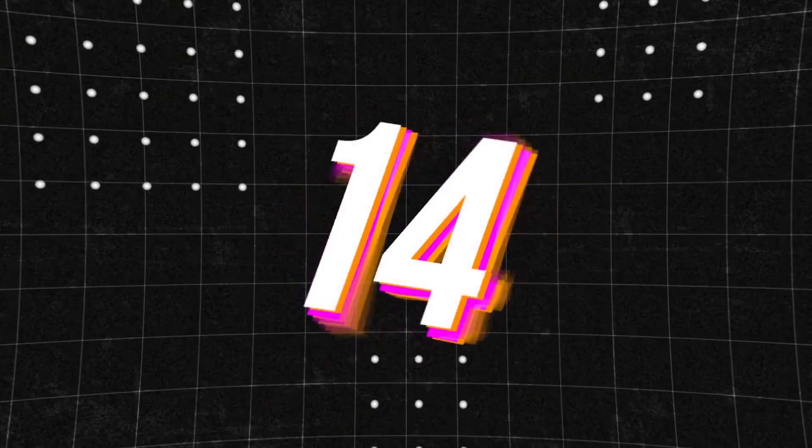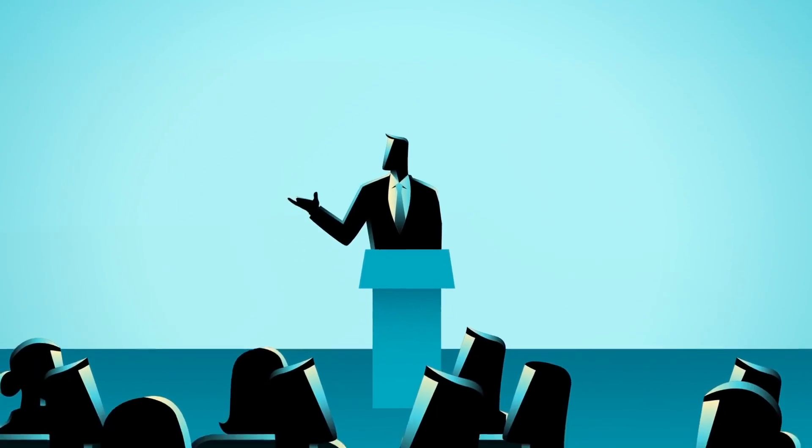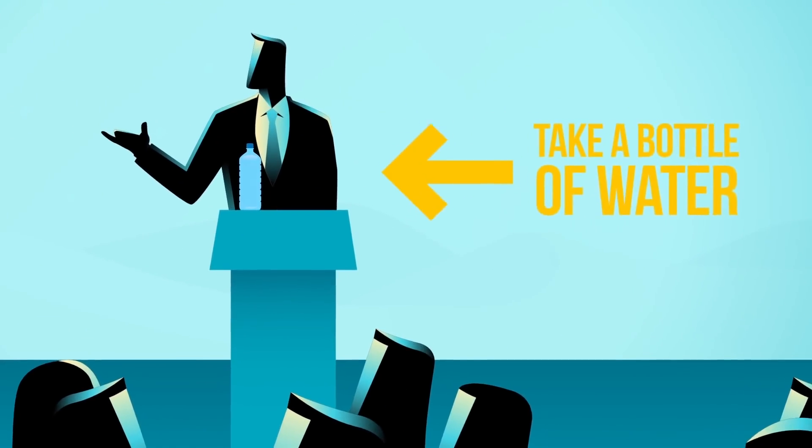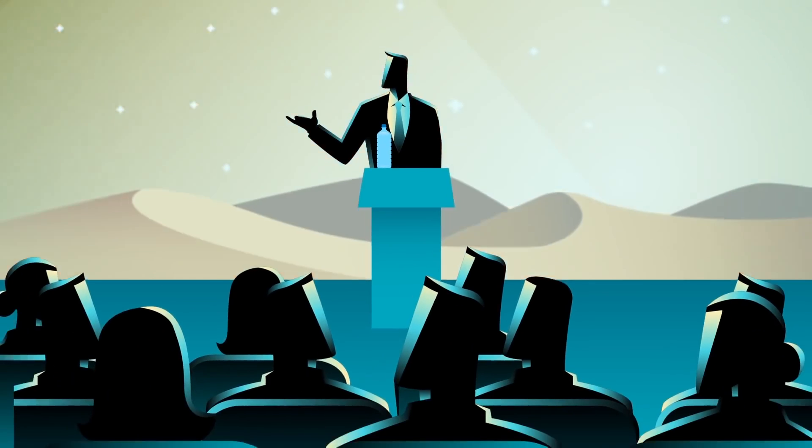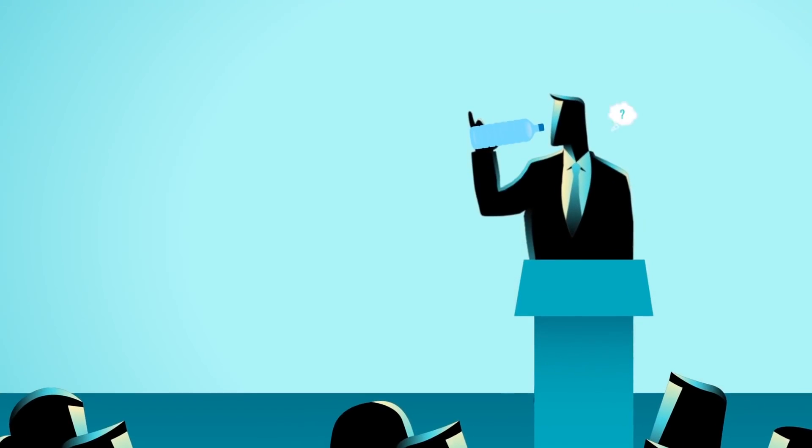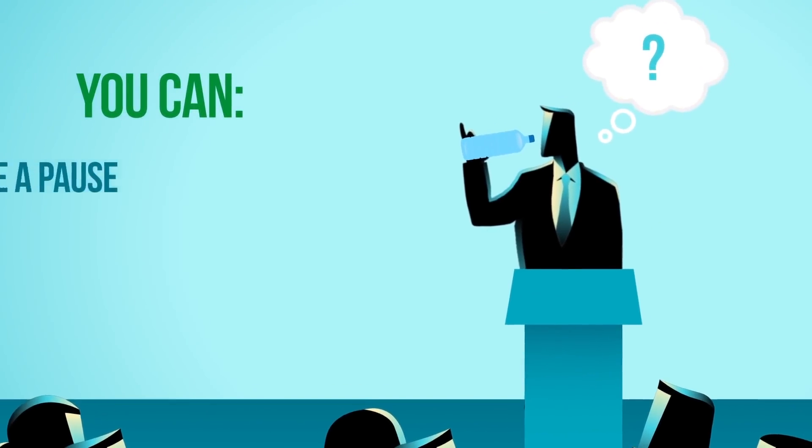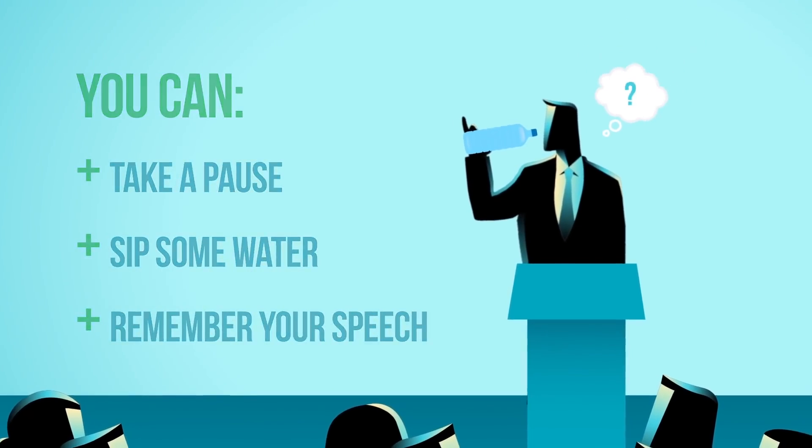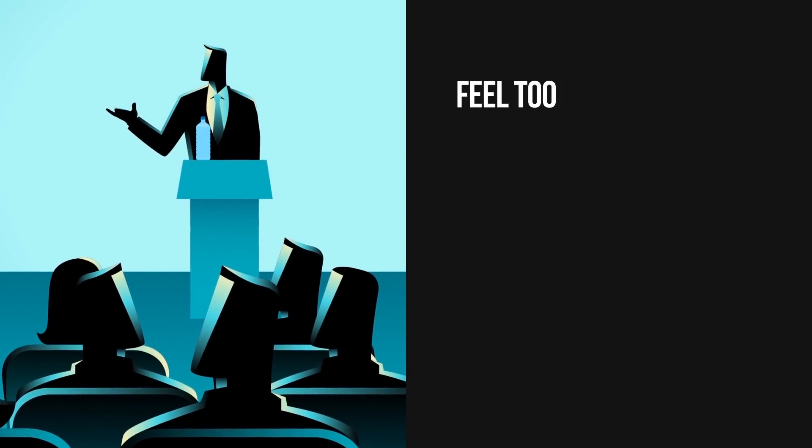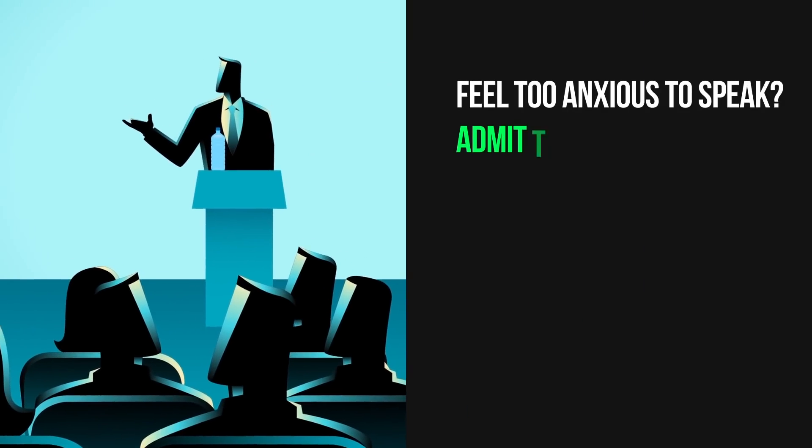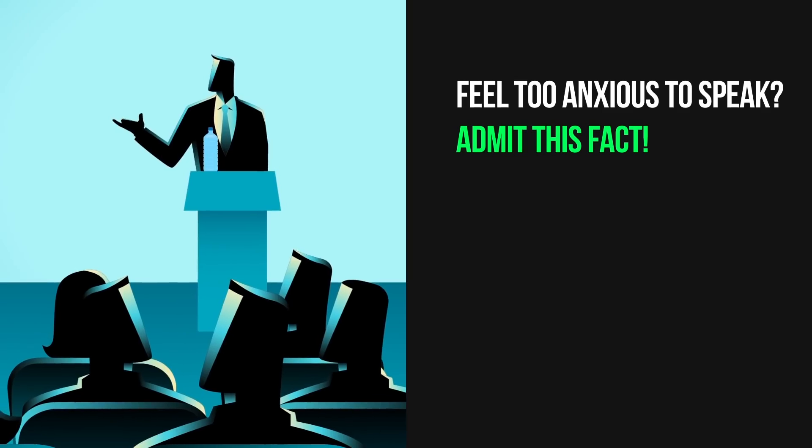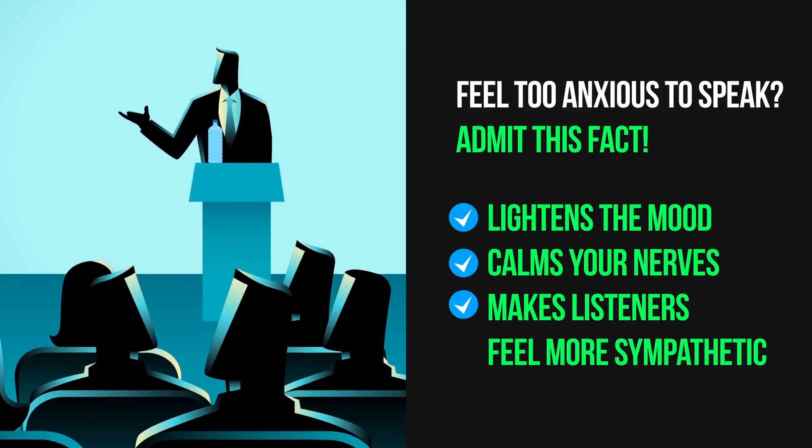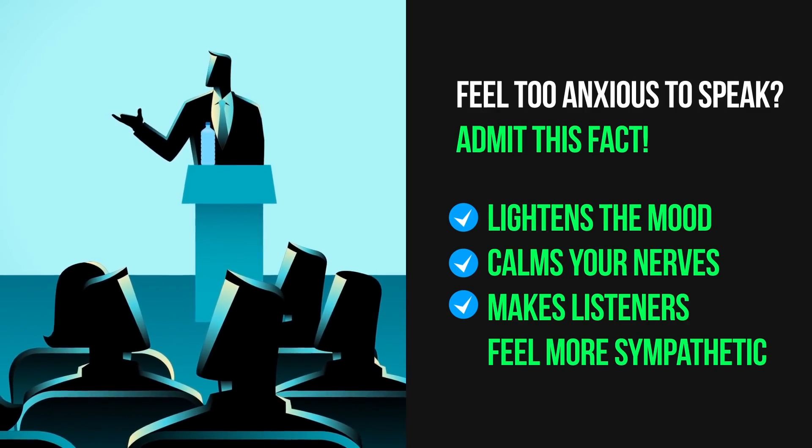Number 14. If you have to speak in public, don't forget to take a bottle of water with you. First of all, you'll need it since your nerves will make your mouth feel like the Sahara desert. Plus, you can take a pause to sip some water in order to remember a part of your speech that slipped your mind. The audience will never know. And if you feel too anxious to speak in front of a large crowd, admit this fact to the audience right away. It lightens the mood, calms your nerves, and it makes your listeners feel more sympathetic since most of them can probably relate.